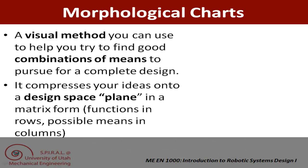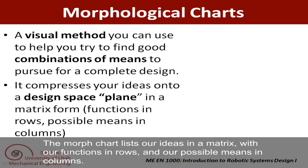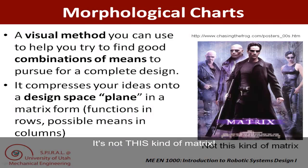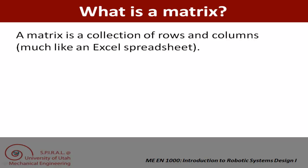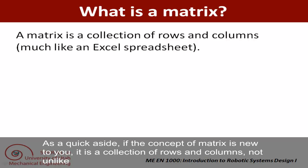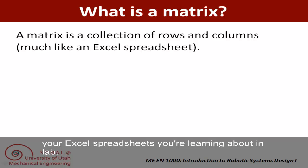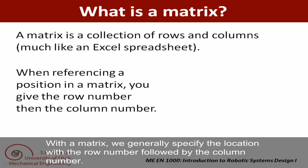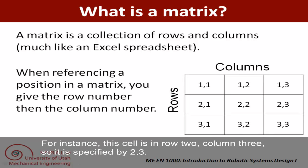The morph chart lists our ideas in a matrix with our functions in rows and our possible means in columns. As a quick aside, if the concept of matrix is new to you, it is a collection of rows and columns, not unlike your Excel spreadsheets you're learning about in lab. With a matrix, we generally specify the location with the row number followed by the column number. For instance, in this cell here, it's in row 2 and column 3, so we would specify it as 2,3.